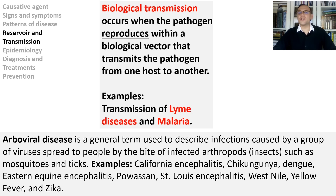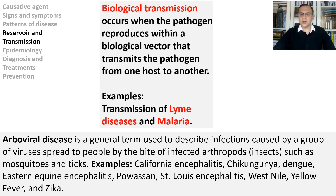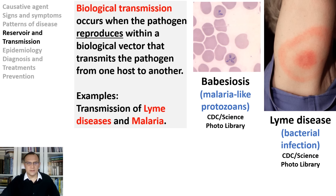Arboviral disease is a general term used to describe infections caused by a group of viruses spread to people by the bite of infected insects such as mosquitoes and ticks. These infections usually occur during warm weather months. Examples include California encephalitis, Chikungunya, Dengue, Eastern equine encephalitis, Powassan, St. Louis encephalitis, West Nile, Yellow Fever, and Zika. Other diseases spread by the bite of infected insects that are not viral infections include Lyme disease, which is a bacterial infection, and babesiosis, which is a parasitic infection — these are not arboviruses.